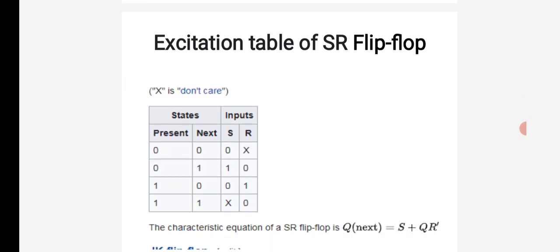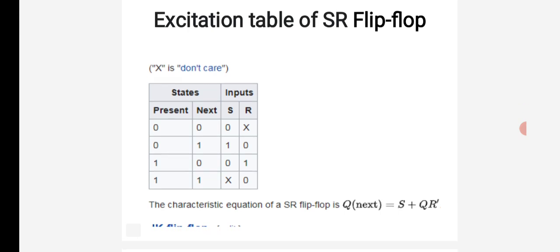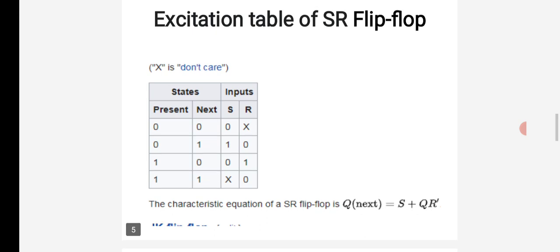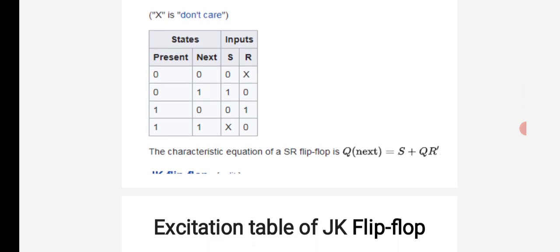For the SR flip-flop excitation table: when present state is 0 and next state is 0, S=0 and R=don't care. When present state is 0 and next state is 1, S=1 and R=0. When present state is 1 and next state is 0, S=0 and R=1. When present state is 1 and next state is 1, S=don't care and R=0. The characteristic equation is: Q(next) = S + Q·R'.